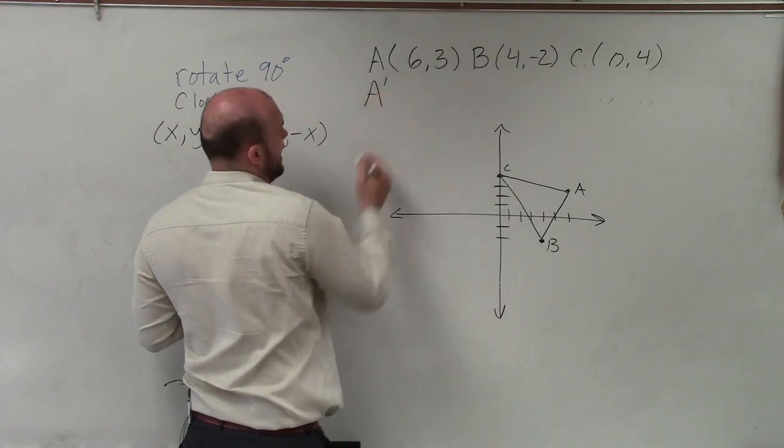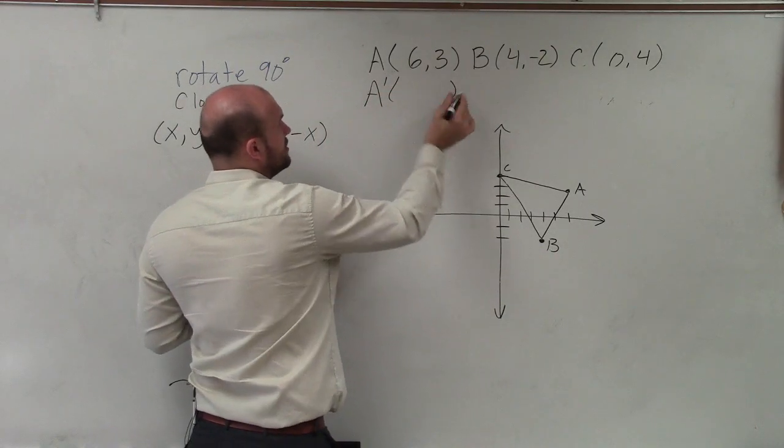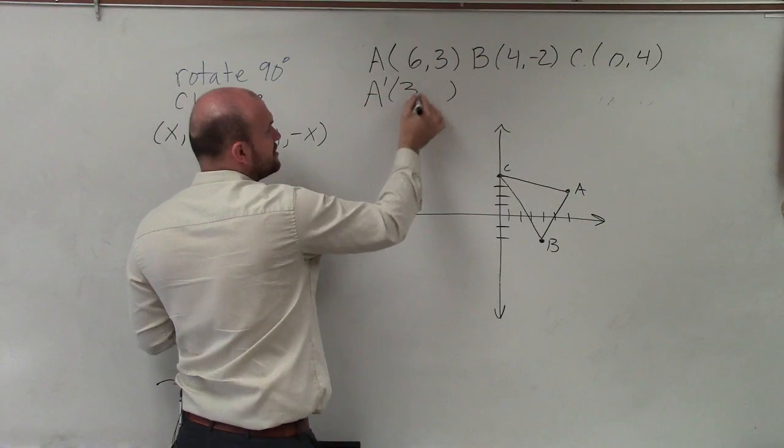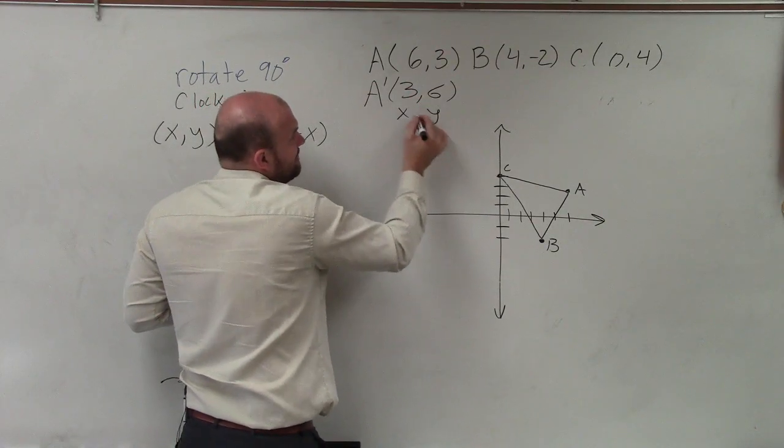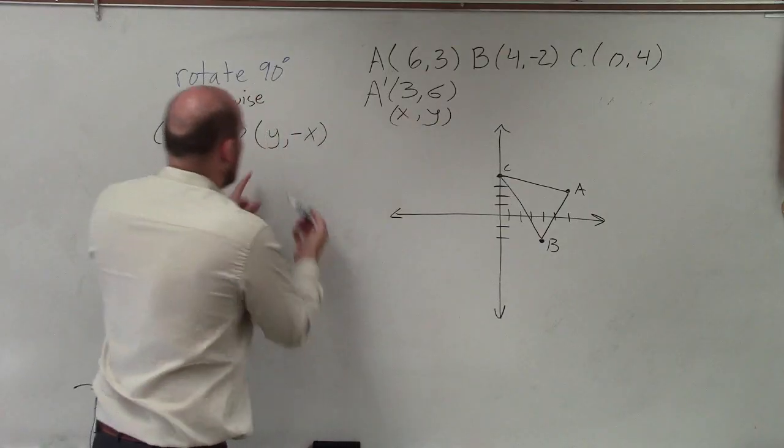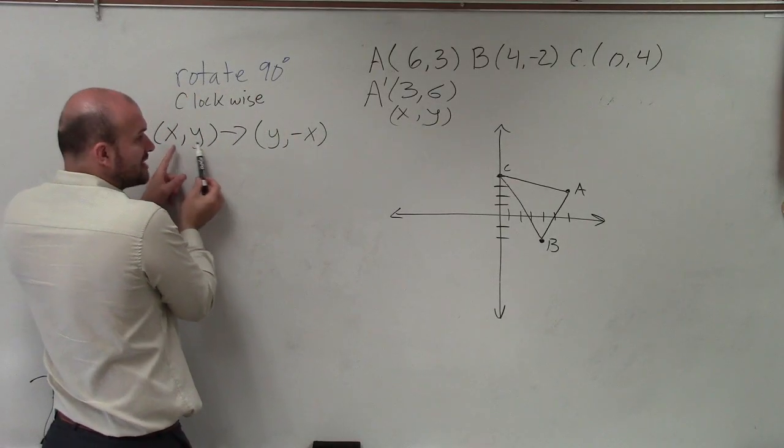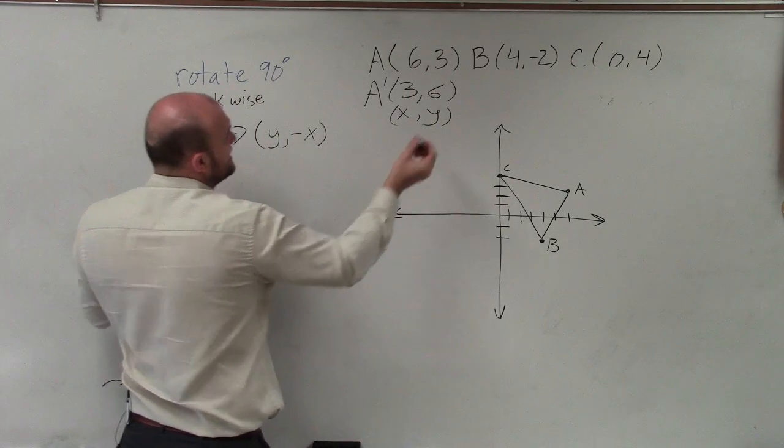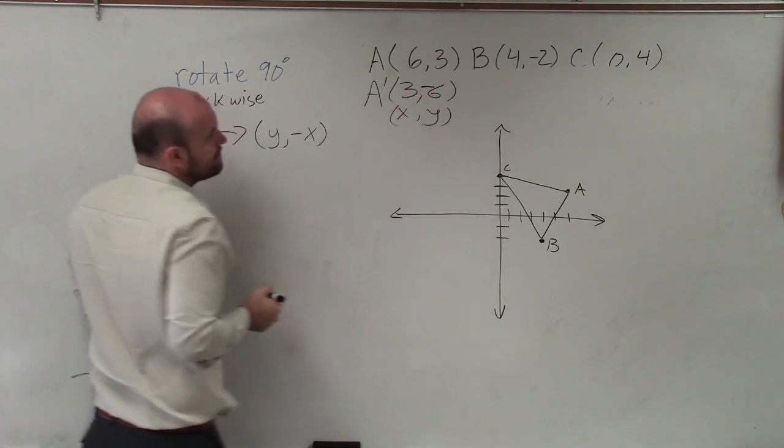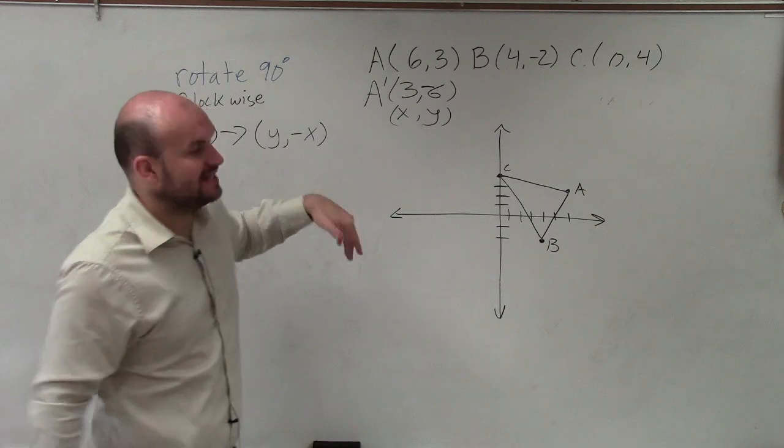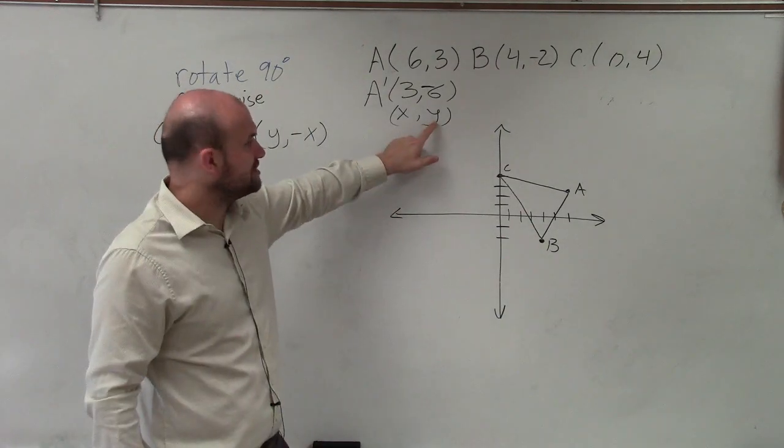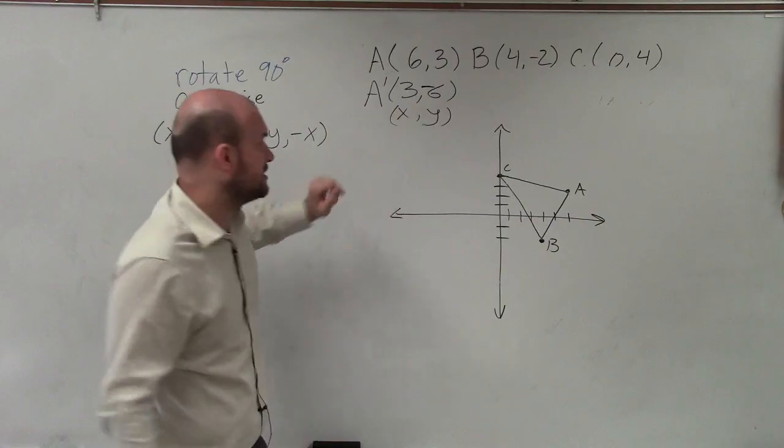So let's take a look at A prime, which would be my new point. All I'm simply going to do is swap my variables, so now it's 3 comma 6. Now this is still an x-coordinate. You're still going to graph that as an x comma y. I just show you what you do with your original (x,y). You swap them and then negate your old x-coordinate, or take the opposite of your old x-coordinate, which is now going to be your new y-coordinate.